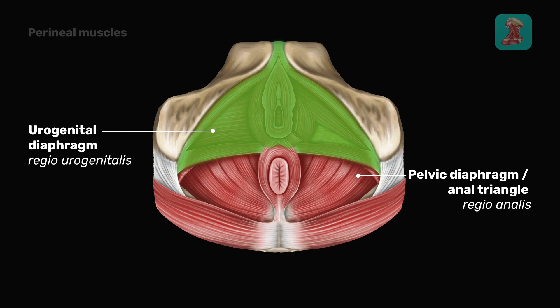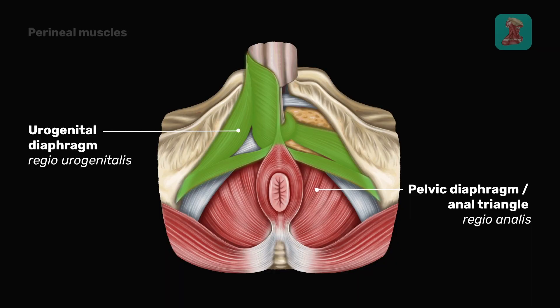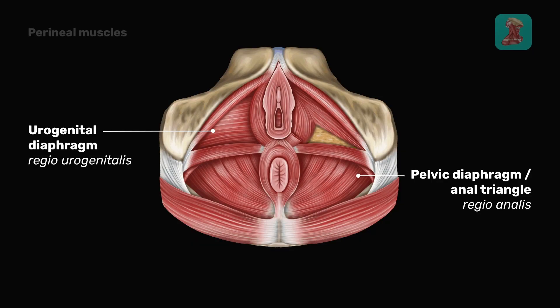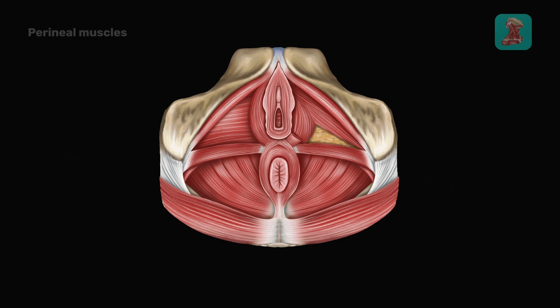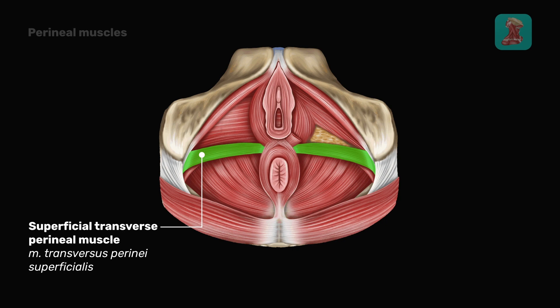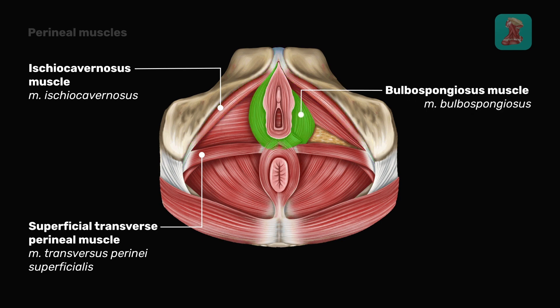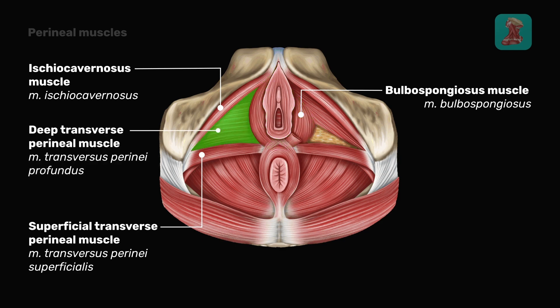Let us now cover the muscles of the urogenital diaphragm. In men, the urethra passes through it, and in women, the urethra and vagina pass through it. The muscles of the urogenital diaphragm are divided into superficial and deep ones. The superficial muscles include the superficial transverse perineal muscle, the ischiocavernosis muscle, and the bulbospongiosis muscle. The deep muscles include the deep transverse perineal muscle and the sphincter of the urethra.